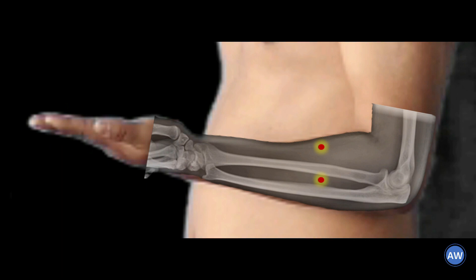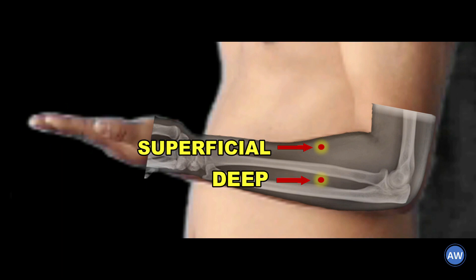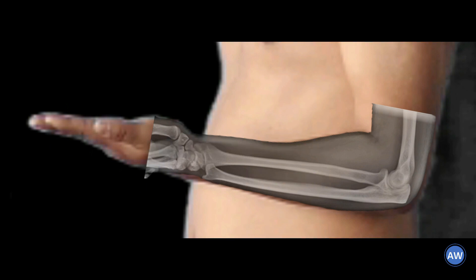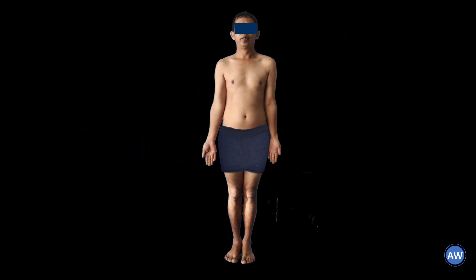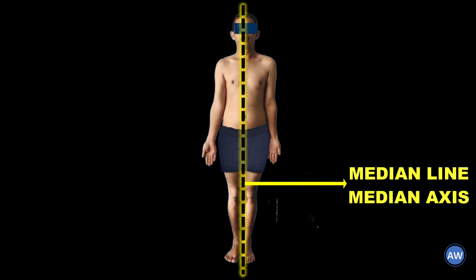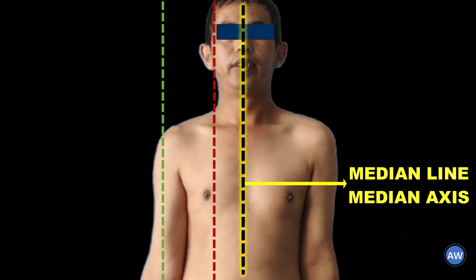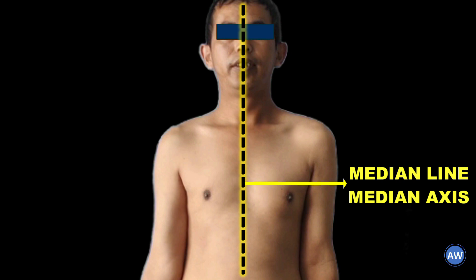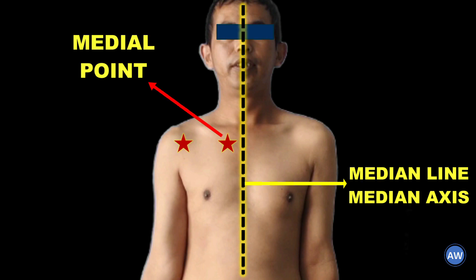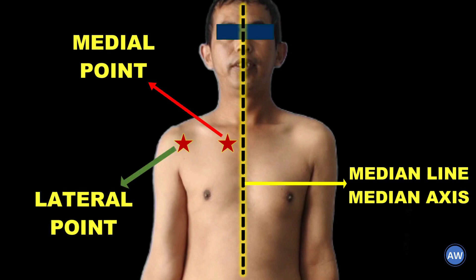Terms used in respect to any surface: superficial means nearer to the surface, and deep means a structure deeper to the surface. For understanding further terminologies, let us imagine a division of the body. This line dividing the body into two equal halves is known as the median line or a median axis. The line which is close to the median line will be called medial, and the line which is away from the median line will be termed lateral. A medial point is near to the midline of the body, and a lateral point is away from the midline of the body.